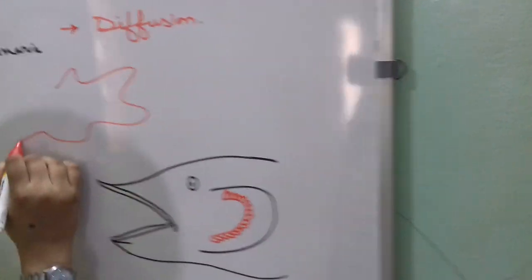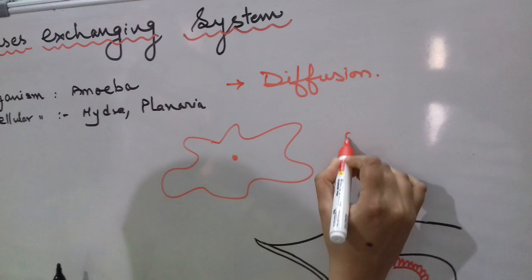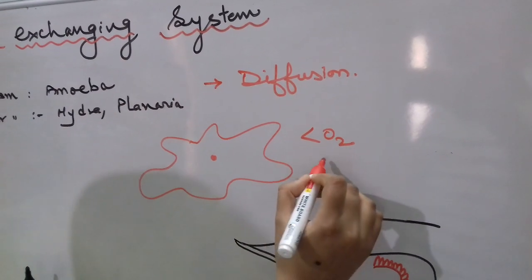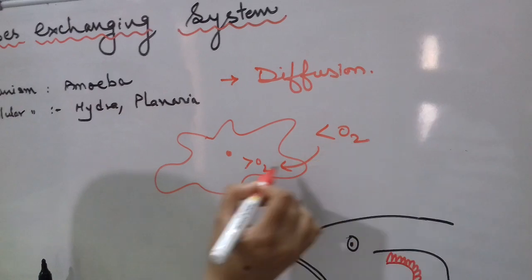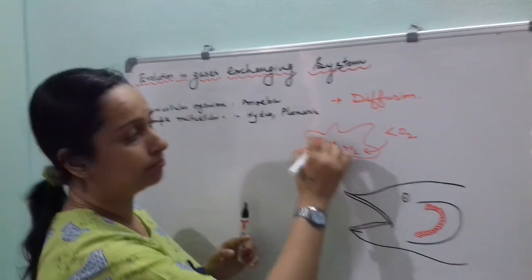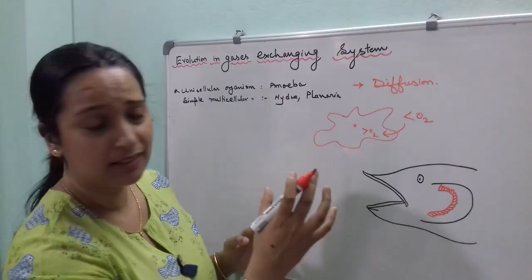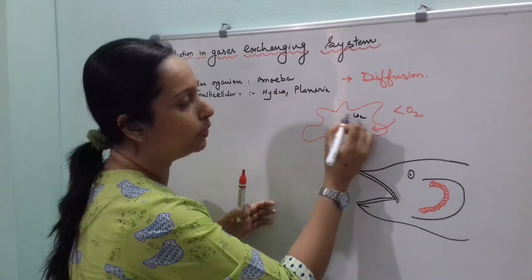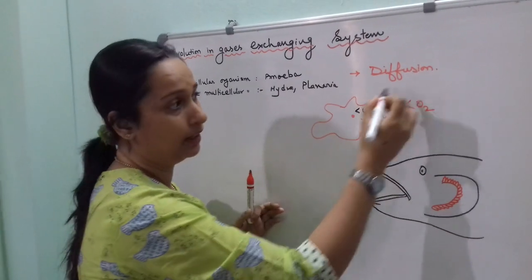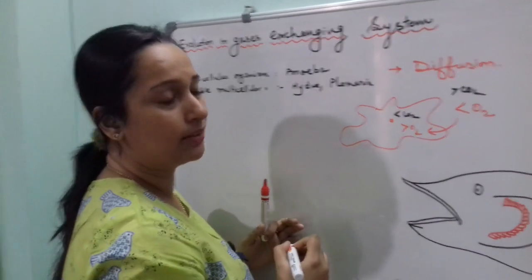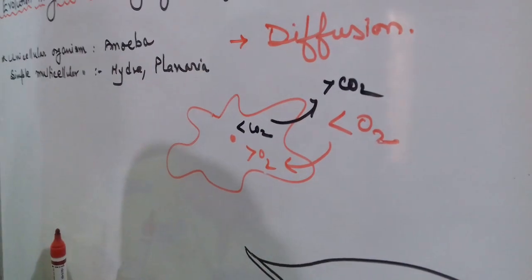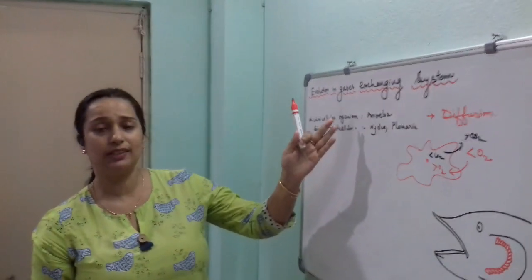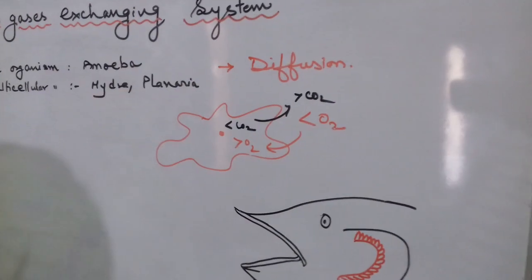For example, in amoeba, oxygen concentration outside is more and inside the cell it is less, so oxygen moves in by diffusion. Respiration occurs inside the cell and CO2 is produced. Since CO2 concentration is more inside the body of the amoeba and less outside, CO2 diffuses out. Thus in unicellular and simple multicellular organisms, diffusion is used for respiratory gas exchange.